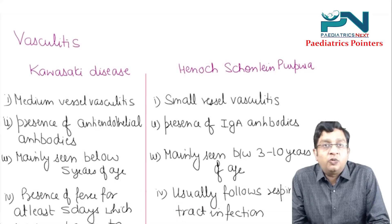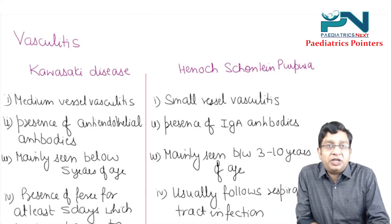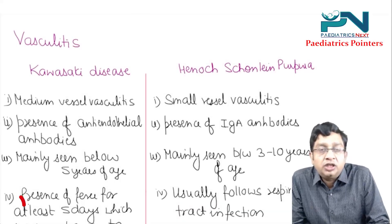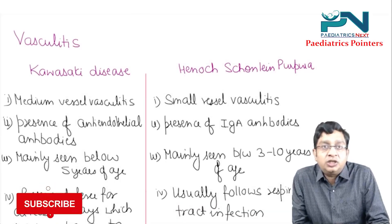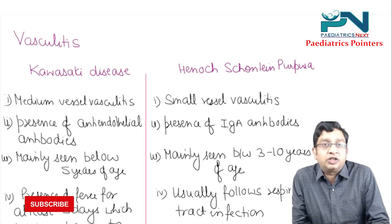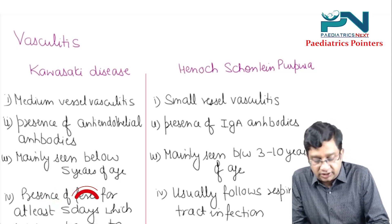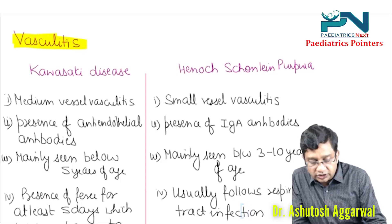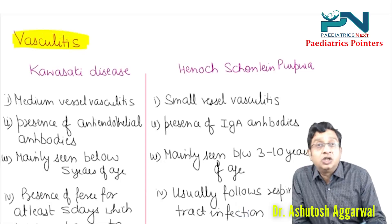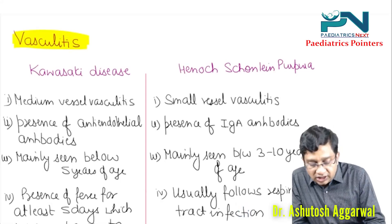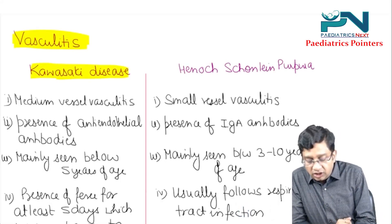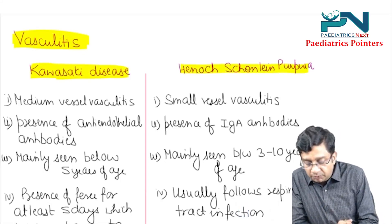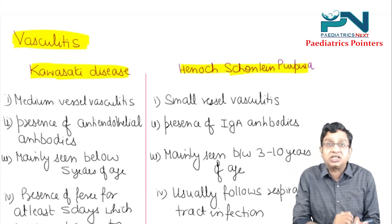Hello students, welcome to the Pediatrics Pointer, your revision program in Pediatrics. Today's topic is vasculitis. Basically, there are two vasculitis conditions you get questions on: one is Kawasaki disease and one is Henoch-Schönlein Purpura, HSP.